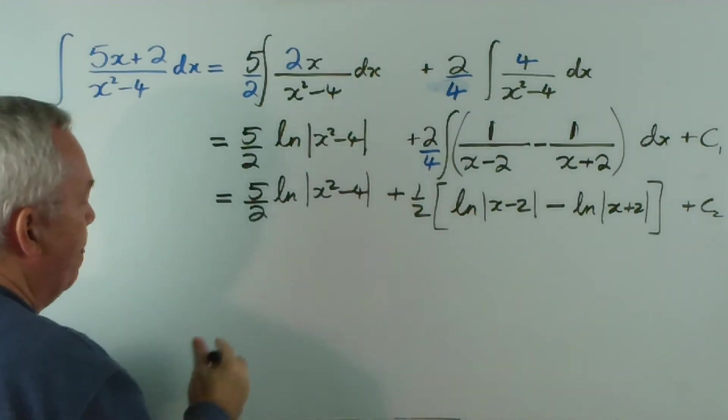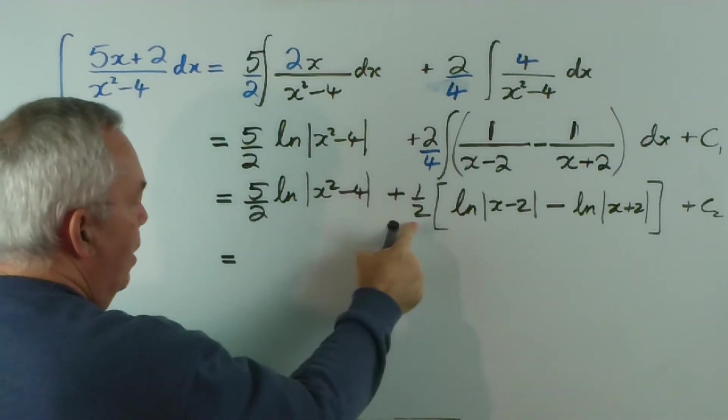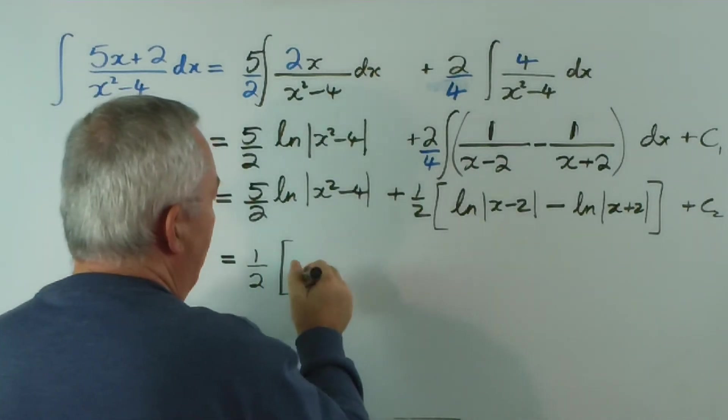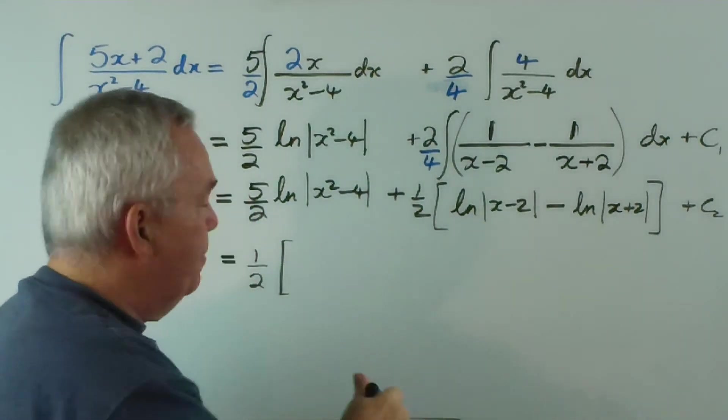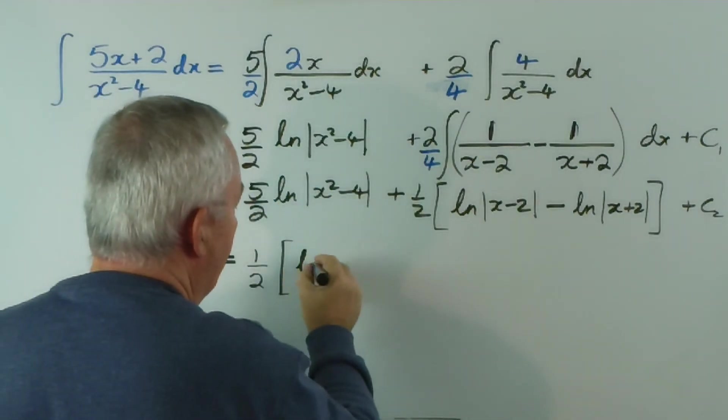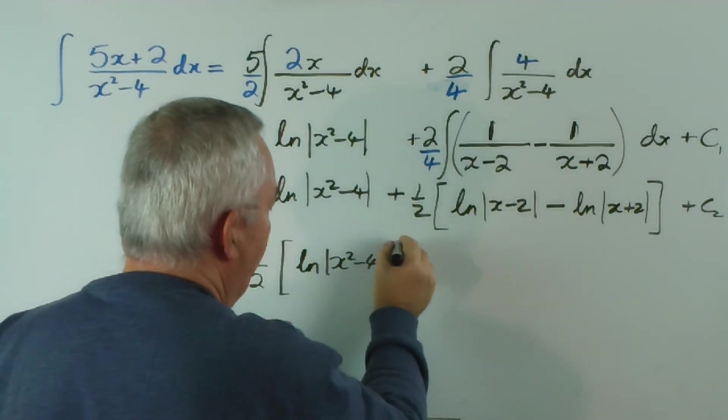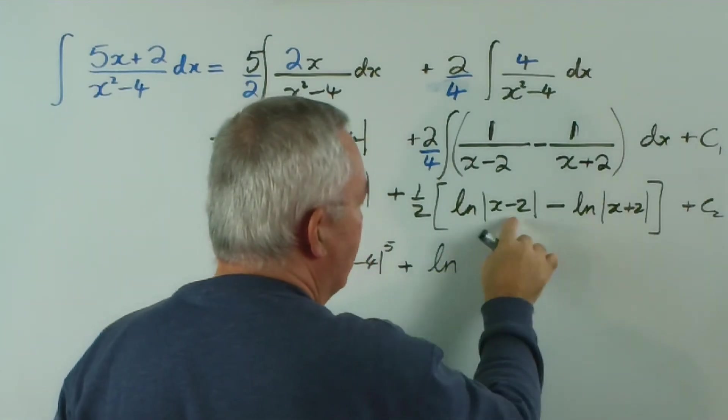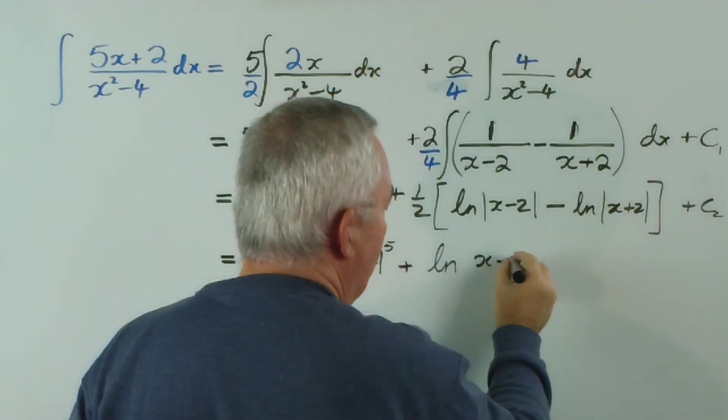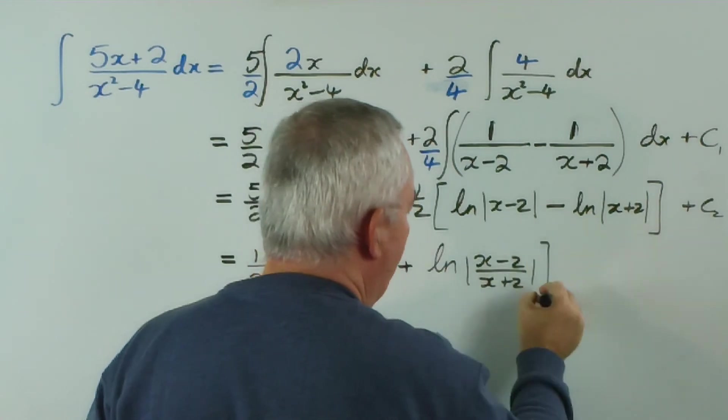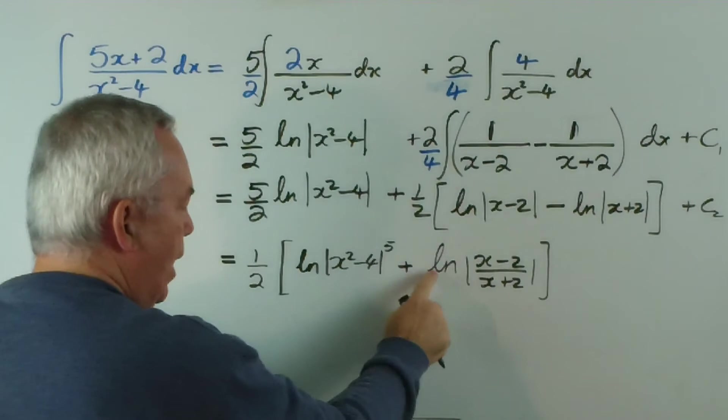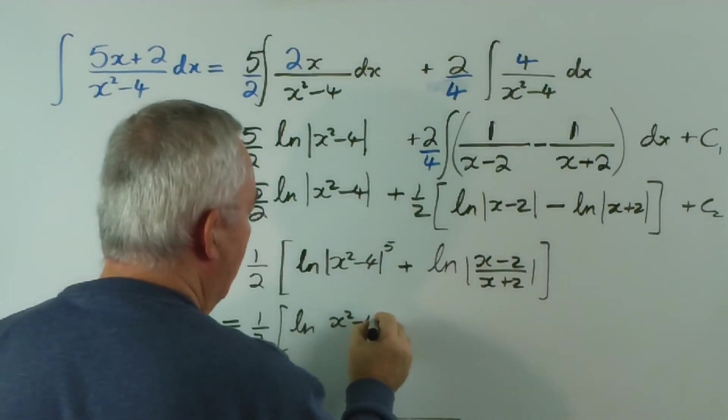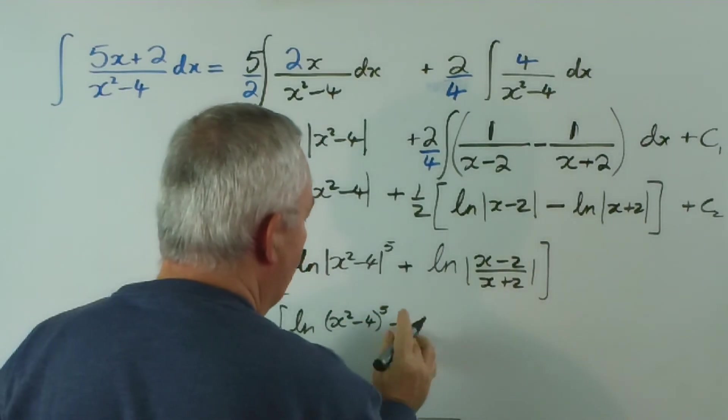I'm going to take half out as a common factor. And I'm going to use my logarithmic rules now. We're in tidy-up mode now. I'm going to move this 5 inside. So I'm going to get the logarithm of x squared minus 4 to the power of 5 plus... Now, I've taken this half out the front. I'm going to evaluate this. This will be the logarithm. Since I'm subtracting the logarithms, I'm dividing the numbers.